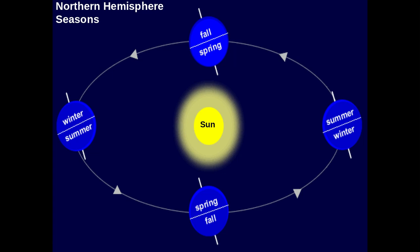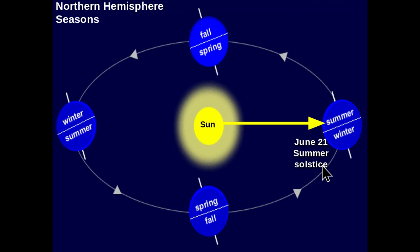Starting with June 21st — if you look at the direction of where the sun rays are focused, they are directly focused on the Northern Hemisphere. Because of the 23.5 degree tilt, the Earth is angled towards the sun. On June 21st in the Northern Hemisphere, this is referred to as the summer solstice, which is also referred to as the longest day of the year. What's really meant is that on June 21st we experience the longest length of sunlight — about 18 hours of sunlight and 6 hours of evening time.